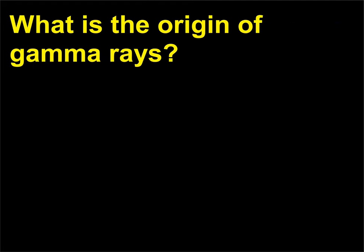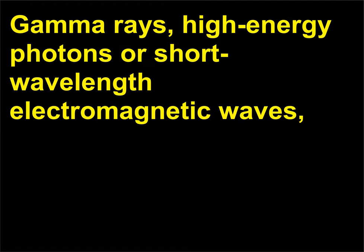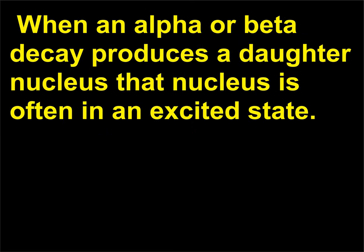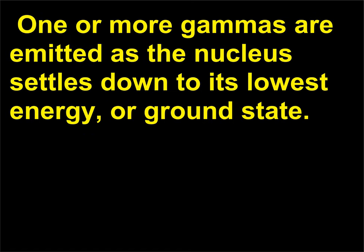What is the origin of gamma rays? Gamma rays are high-energy photons, or short-wavelength electromagnetic waves. They are emitted from the nucleus along with an alpha or beta decay. When an alpha or beta decay produces a daughter nucleus, that nucleus is often in an excited state. One or more gammas are emitted as the nucleus settles down to its lowest energy, or ground state.